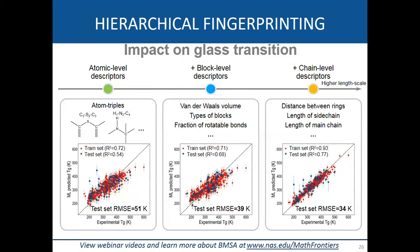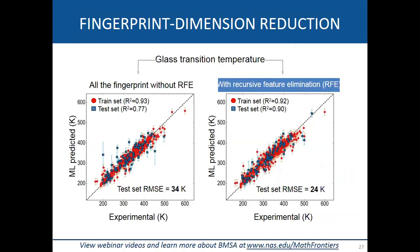The high dimensionality from A+B+C features is addressed using recursive feature elimination to remove features not strongly correlated to the property. After elimination, we get a tight model with an RMSE of about 24 Kelvin — which matches the experimental error bar on these measurements. We believe this model can predict glass transition temperature at an accuracy equivalent to the uncertainty of the original experiments.